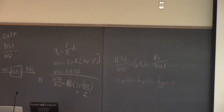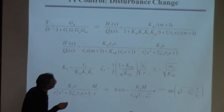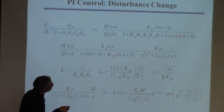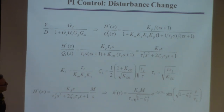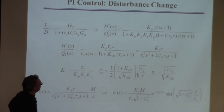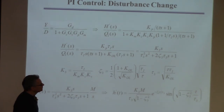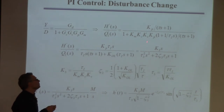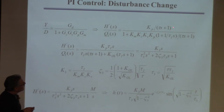Just plug everything in — it looks exactly like the previous example, except that when I plug in GC, I don't just get a KC; I get KC times this stuff. The GP is KP over tau*S + 1, and GC is KC times that. I'm concerned because whatever algebraic manipulation I do here is not going to lead to something as simple as I would like.